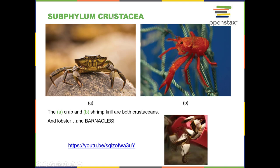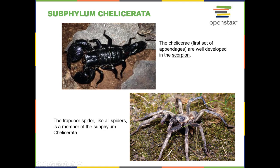Subphylum Crustacea includes things like shrimp, crab, lobster, krill, and barnacles. Barnacles are really quite fascinating — they might almost remind you of a clam-like animal because of their shell structure, but they're not. They're crustaceans. I'll link a video of barnacles in your lecture module.